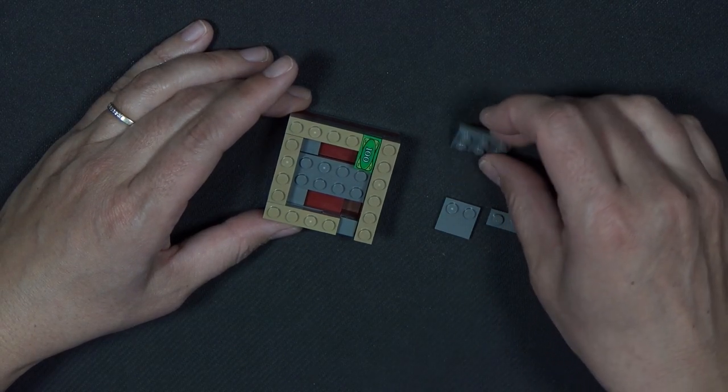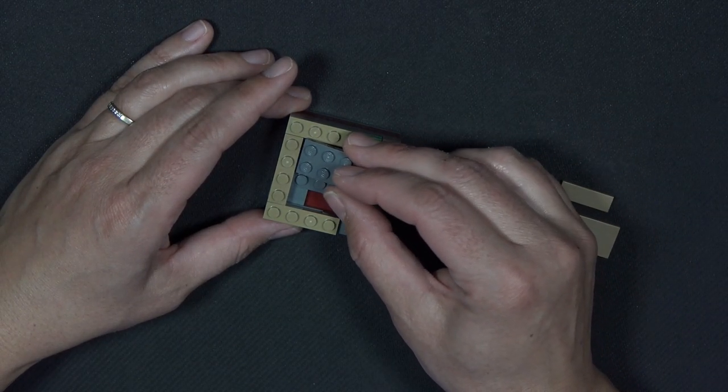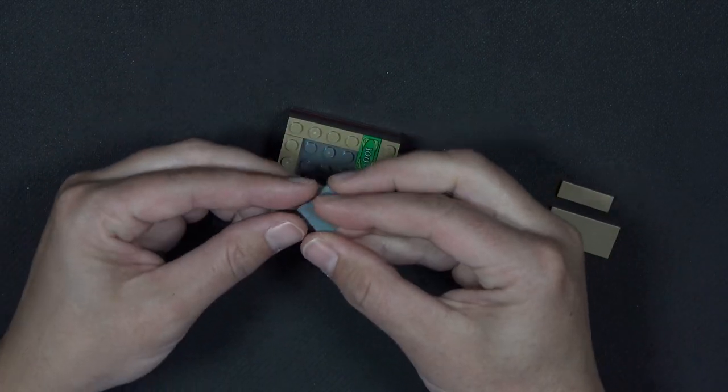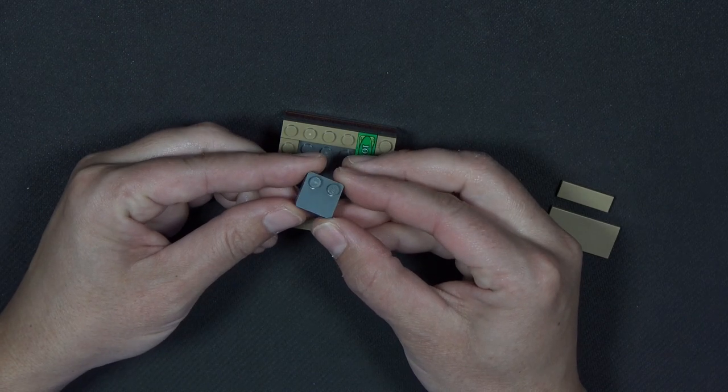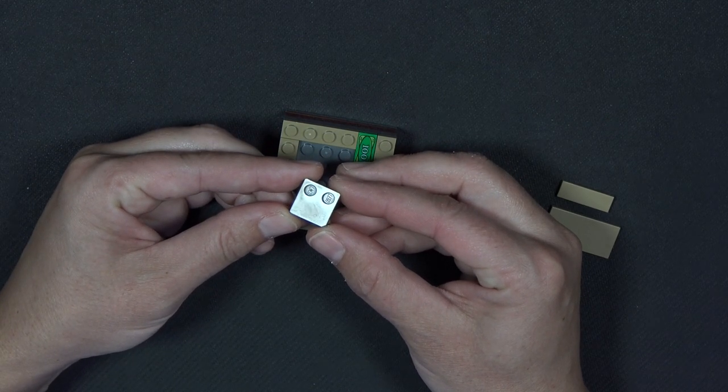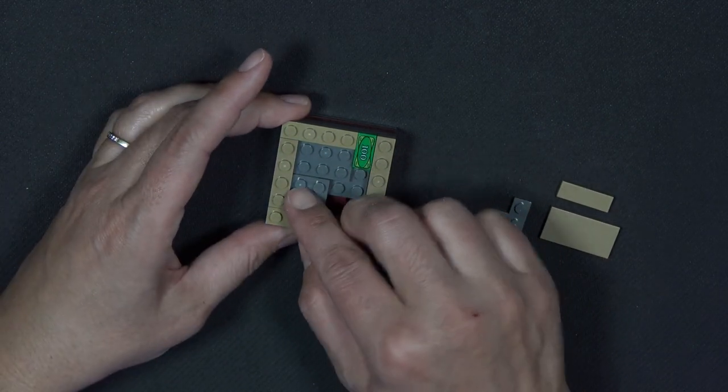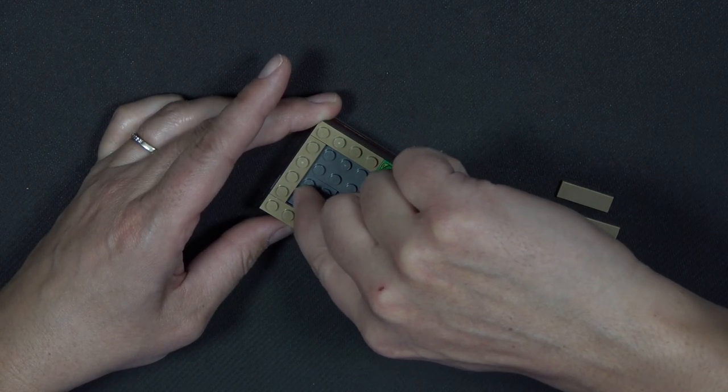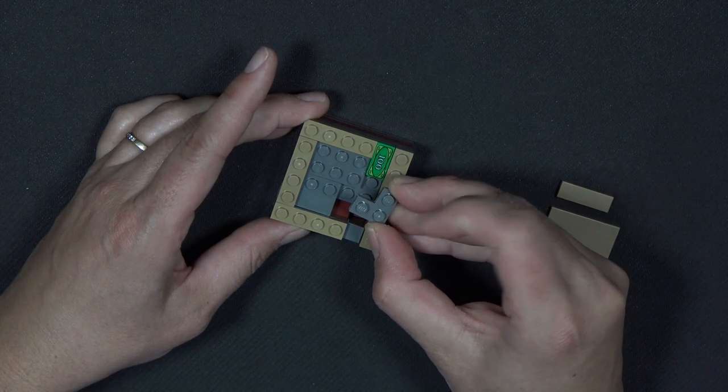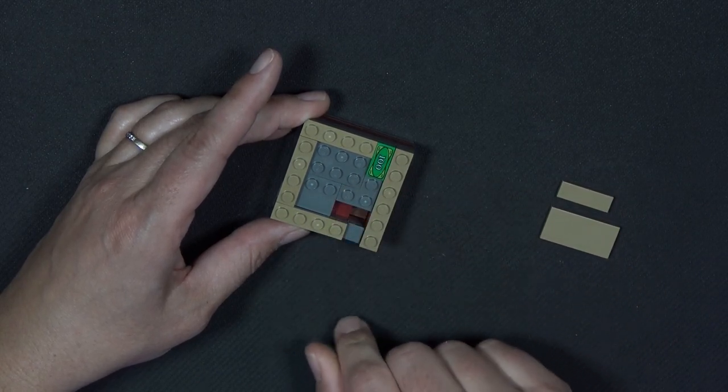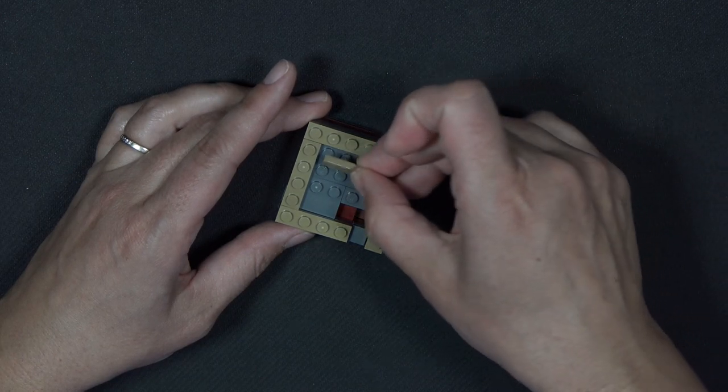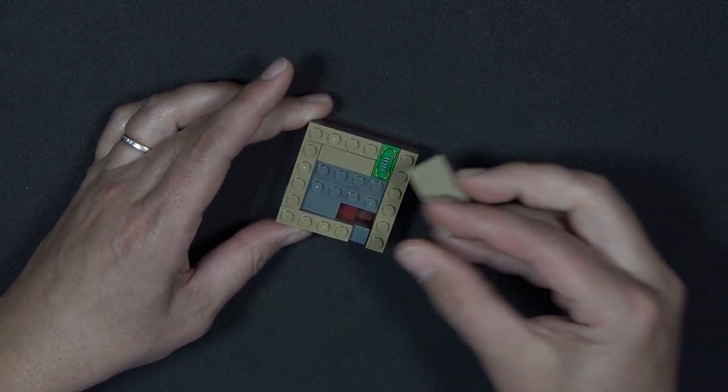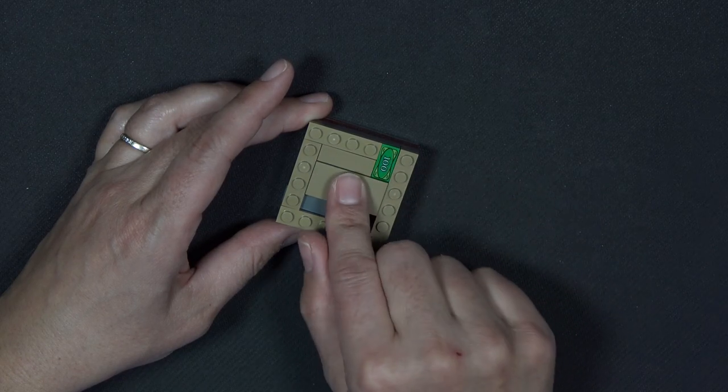And then I have a 2x3 plate in the dark bluish gray. That one goes here. And this is another one of those 2x2 modified tile pieces with two studs. The studs are here, and then the clear or tile portion is there. And then I have a 2x2 corner plate. That one goes here. And a 1x3 tile in dark tan, and a 2x4 tile in dark tan.